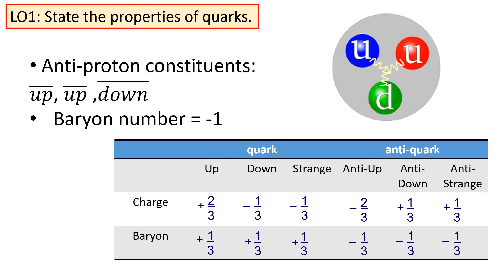For example, let's look at anti-proton. An anti-proton would have constituents anti-up, anti-up, anti-down, giving it an overall baryon number of minus one.